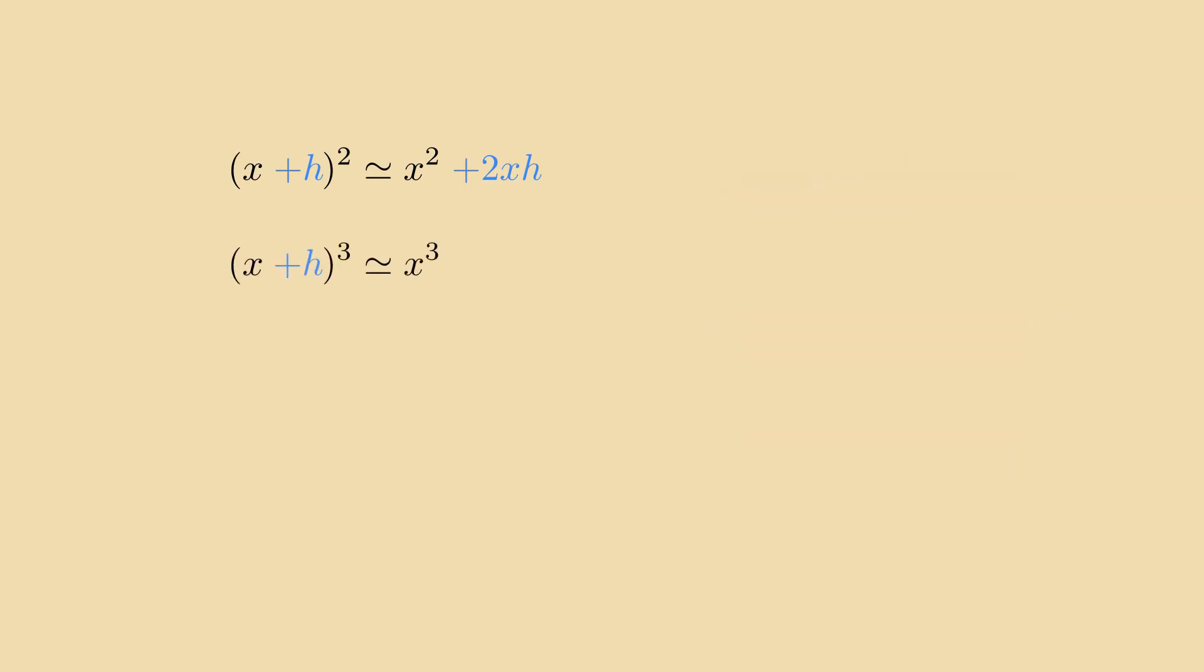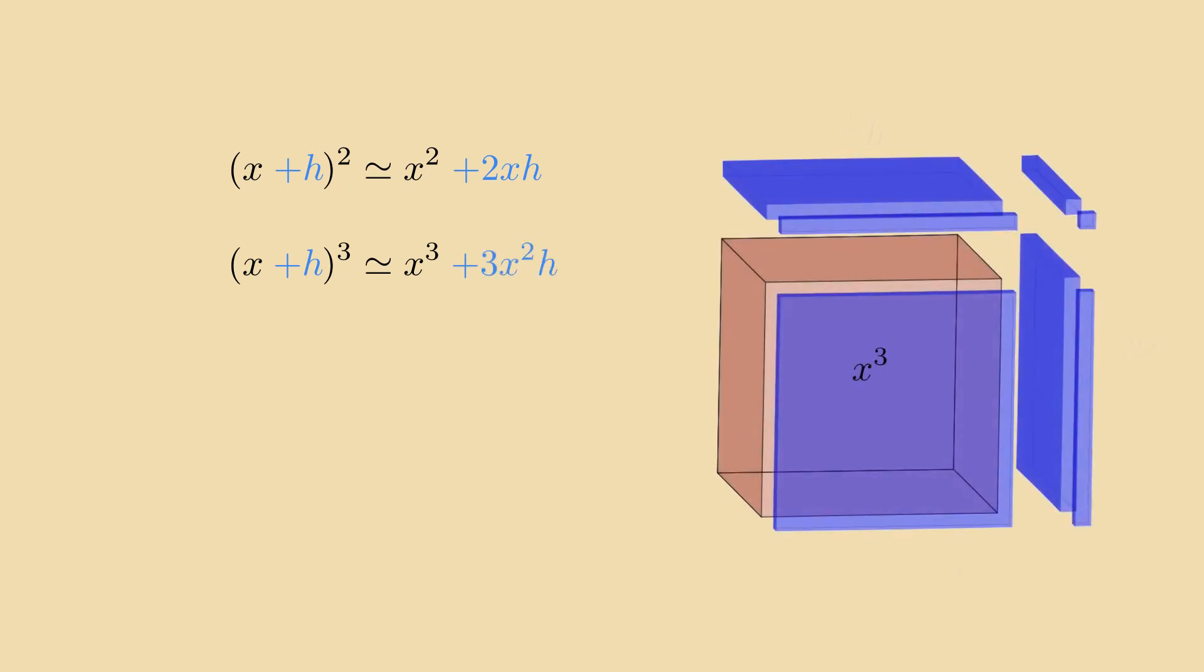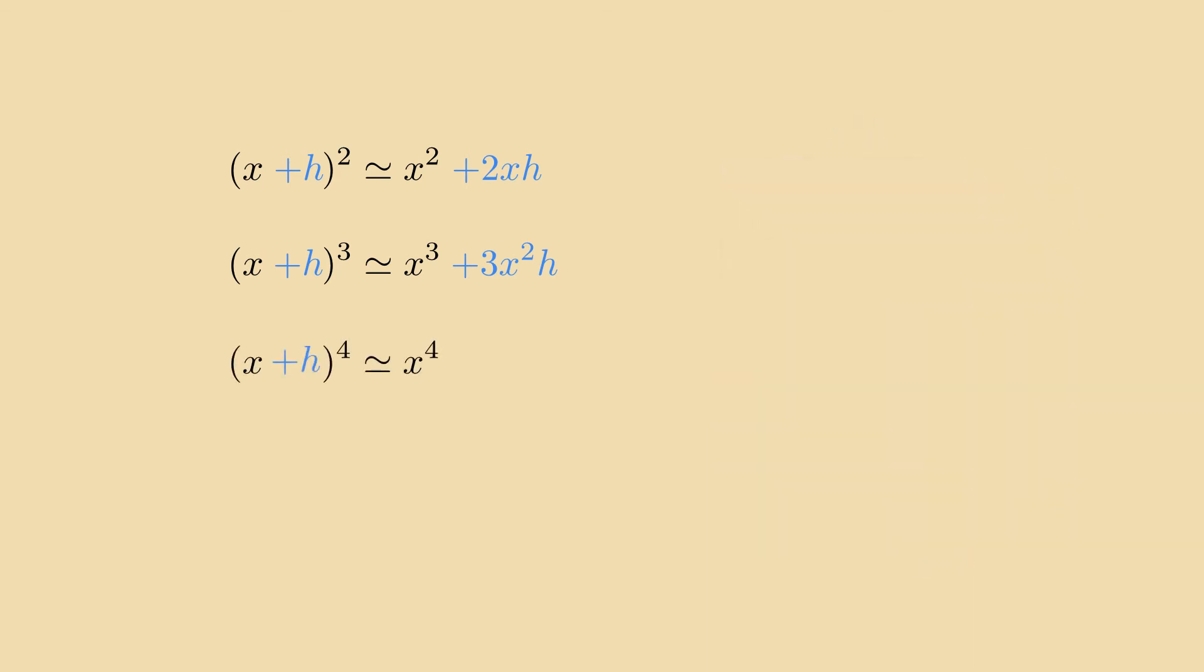The cube of x plus h can be thought of as the volume of, well, a cube whose width has grown slightly along all three axes. The main contribution to the increase in volume comes from the three slabs x squared h. There is a pattern here that continues into higher dimensions. The fourth power of x plus h, that is the volume of a slightly grown hypercube, equals x to the 4 plus contributions from four of its cubic sides, so 4x cubed h in total, plus again negligible terms.